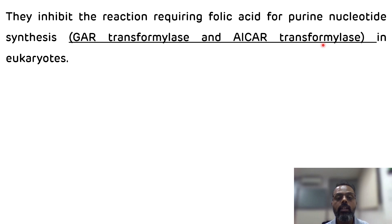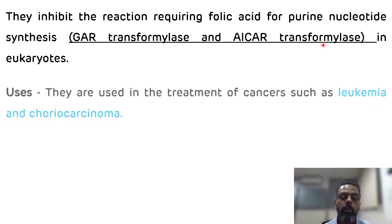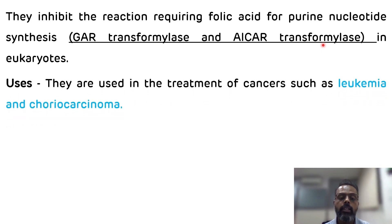The uses of methotrexate and aminopterin: they are used in the treatment of cancers such as leukemia and choriocarcinoma. That is the first example of purine nucleotide synthesis inhibitors.